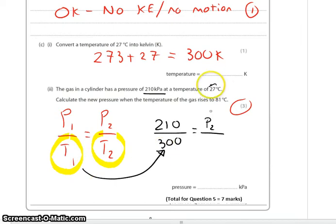So T1 in Kelvin, 27 degrees, is 300 Kelvin. And this is 354. And therefore our new pressure is going to be 210 over 300 times 354, which is about 248 kilopascals.